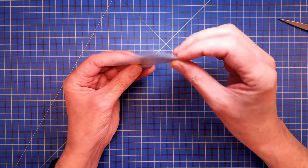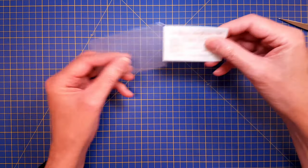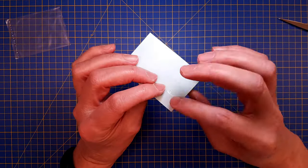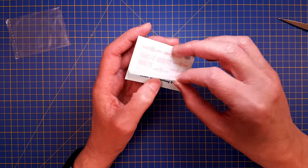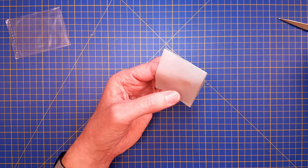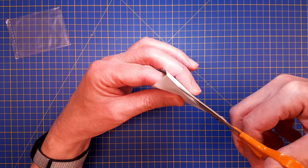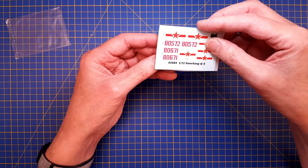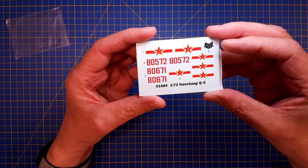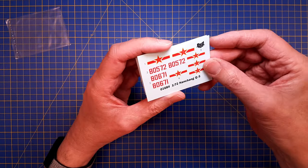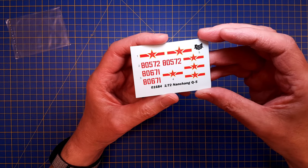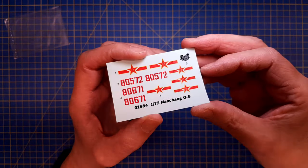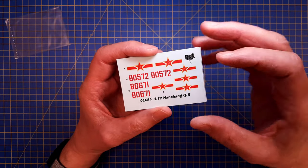The decals are also individually packed with protective paper taped in place so you don't lose it. For an aircraft, it's not much - we have Chinese markings and numbers and also an instrument panel decal.